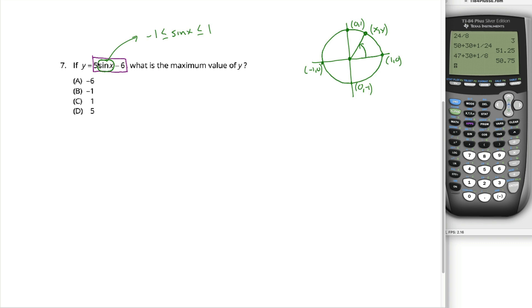You want to make this expression as big as possible? Well, what should you choose for sine? You can choose any number you want between negative 1 and positive 1. Well, that number is going to get multiplied by 5, and then I'm going to subtract 6 from that product. So if I want to be left with something as large as possible, I should make sine as large as possible because it's going to get multiplied by a positive 5.